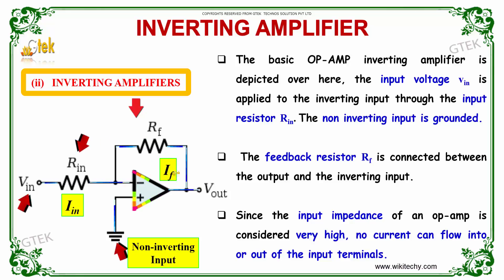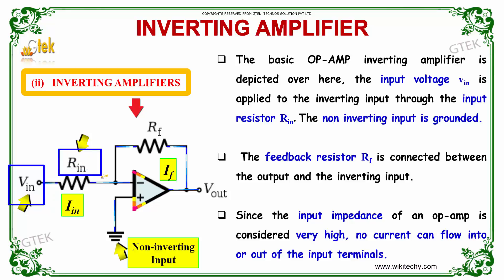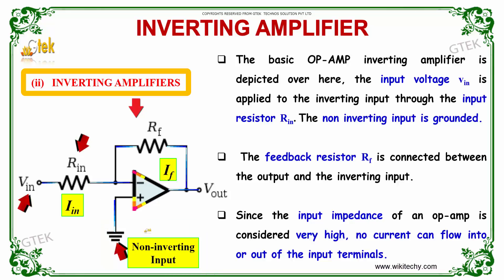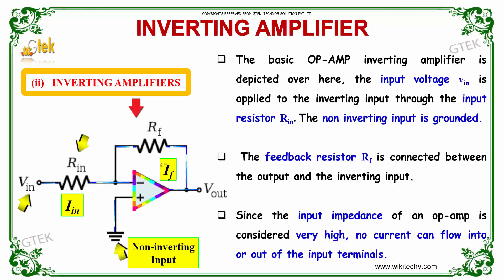The basic operational amplifier inverting amplifier is depicted here very clearly. The input voltage V_in is applied to the inverting input through the input resistor R_in, and the non-inverting input is grounded. The feedback resistor R_F is connected between the output and the inverting input.